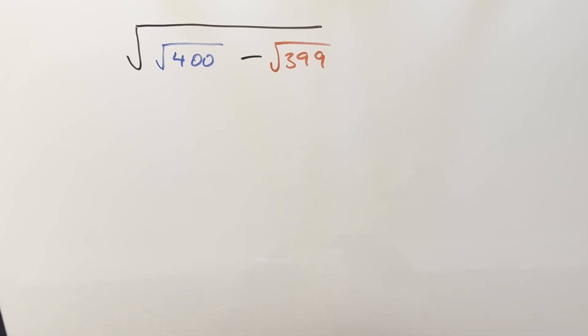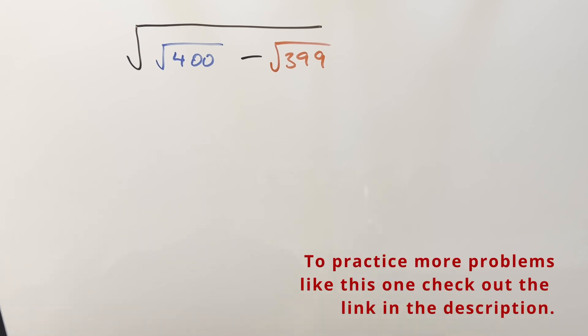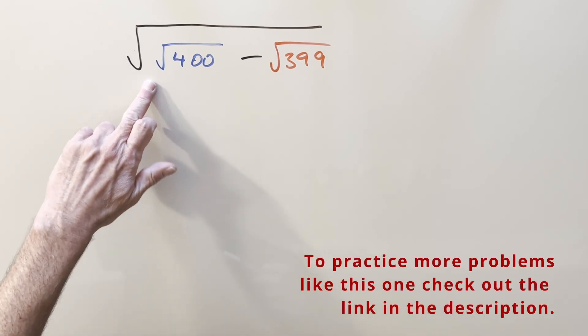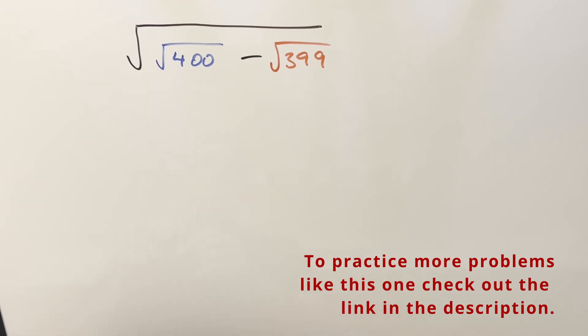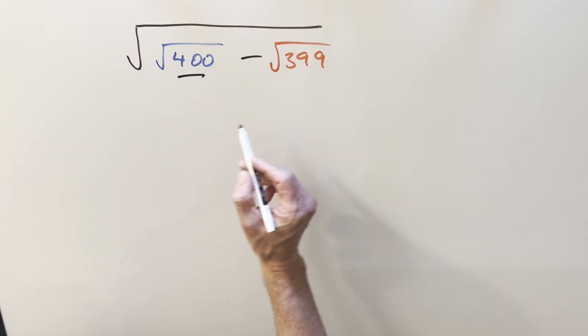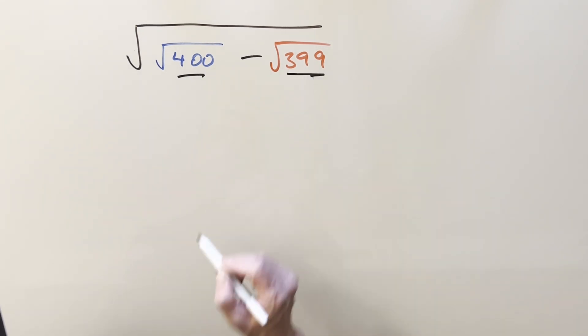I don't know if you guys ever browse YouTube and look for math Olympiad problems. A lot of times you get things like this, where you get a nested radical. It seems to always be subtraction, even though you could have addition.